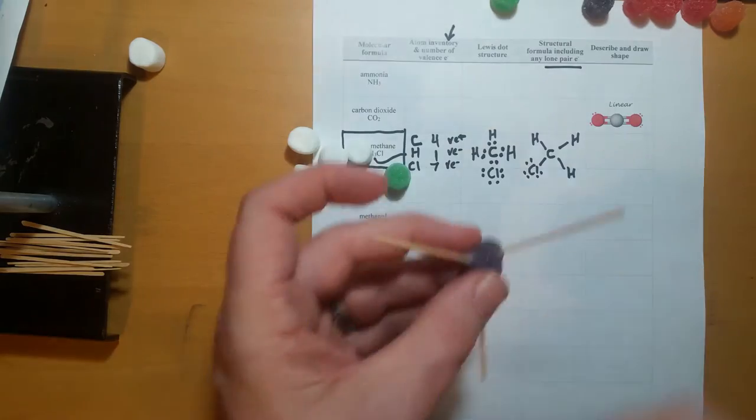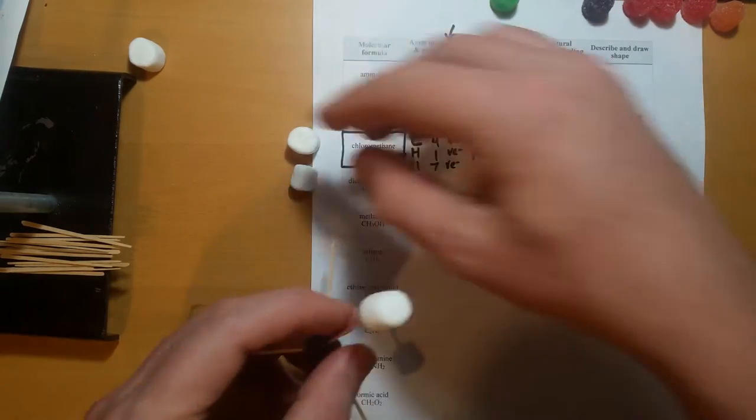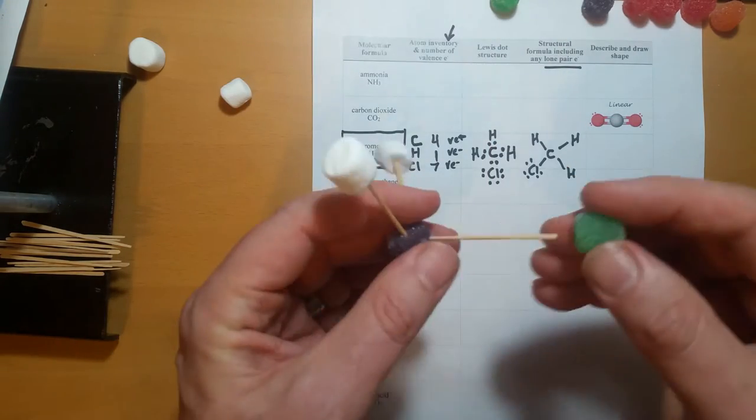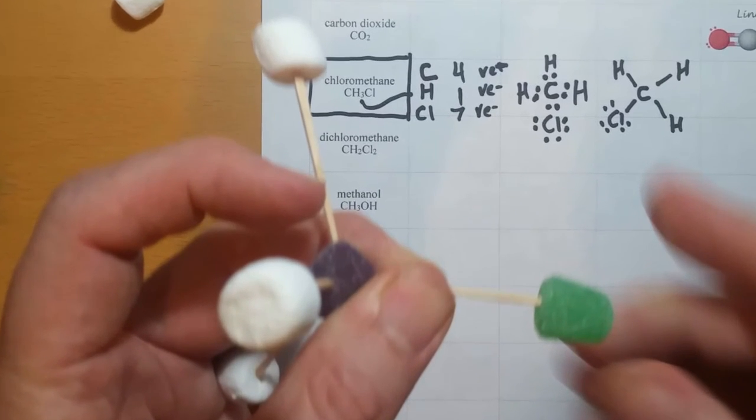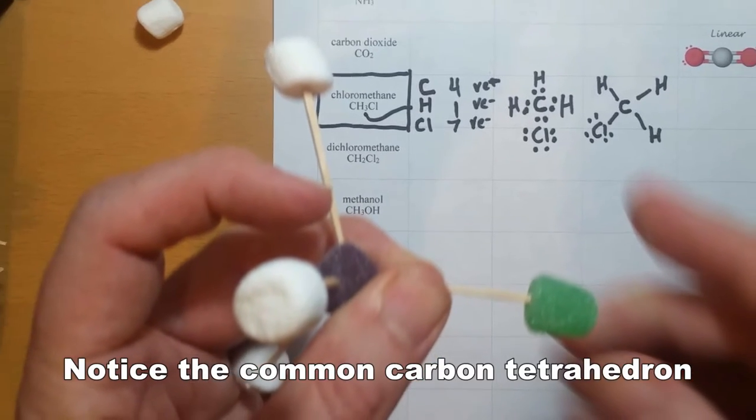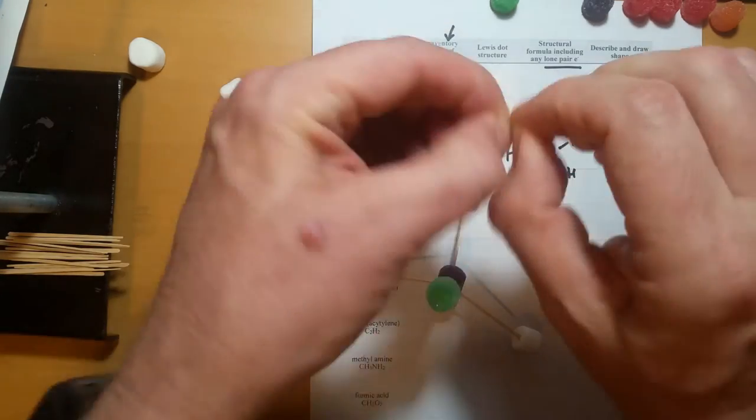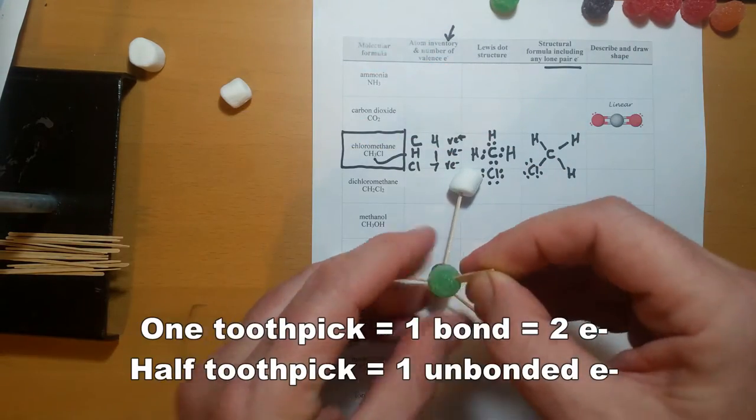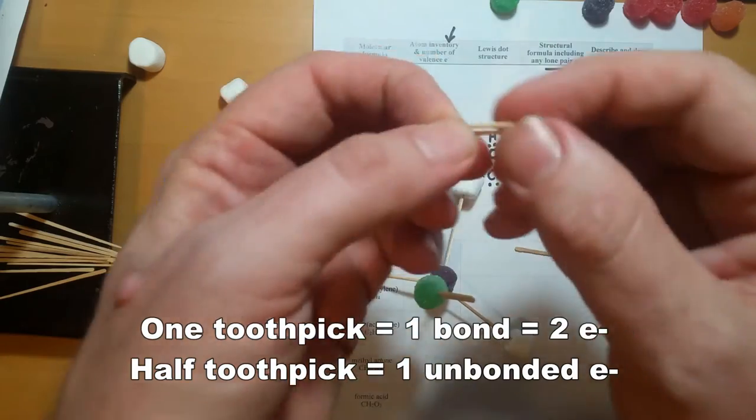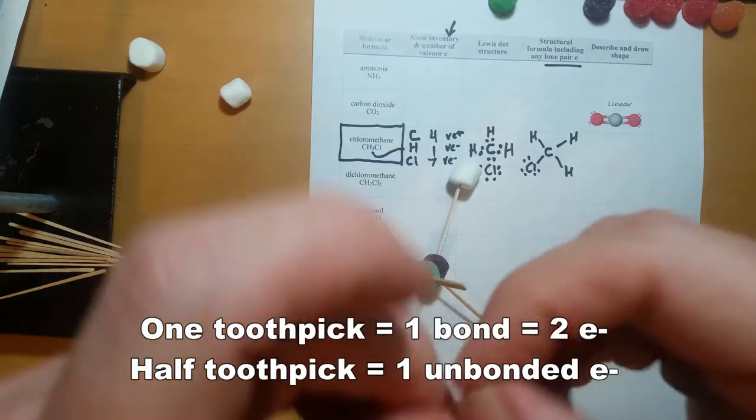Add the three hydrogen atoms and the chlorine atom. Now we can see the framework of carbon's common tetrahedral shape. We still need to add three lone pairs for chlorine. Since each toothpick represents two electrons in a bond, break a toothpick in half to represent two lone pair unbonded electrons.